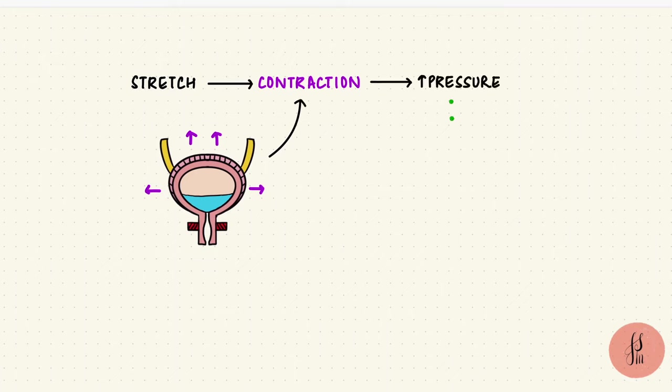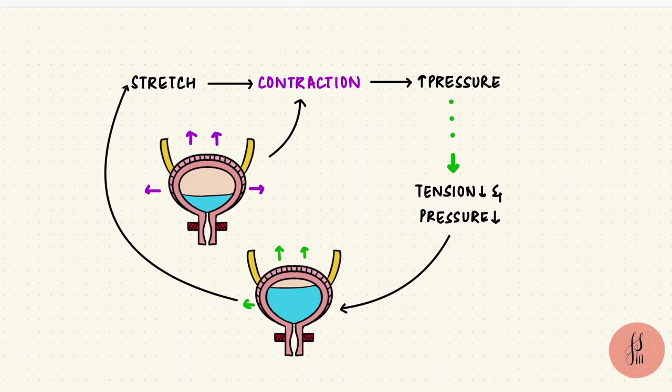But after a while, the tension in the muscle and so the pressure comes down. The muscle adapts to the new length until the volume changes again. This is called stress relaxation. This helps organs like the bladder store their contents temporarily.